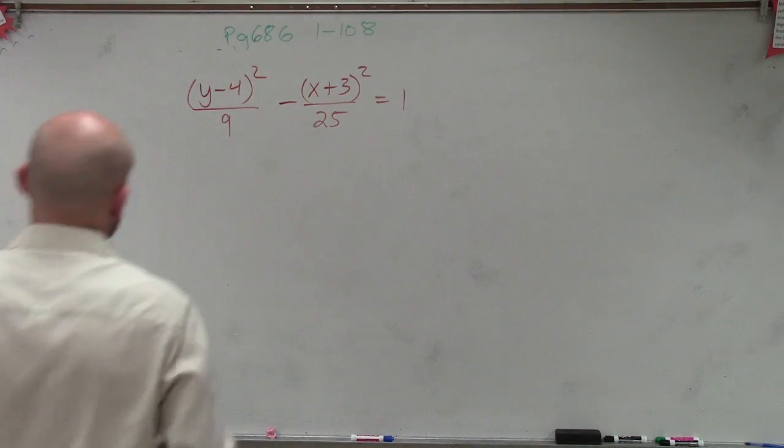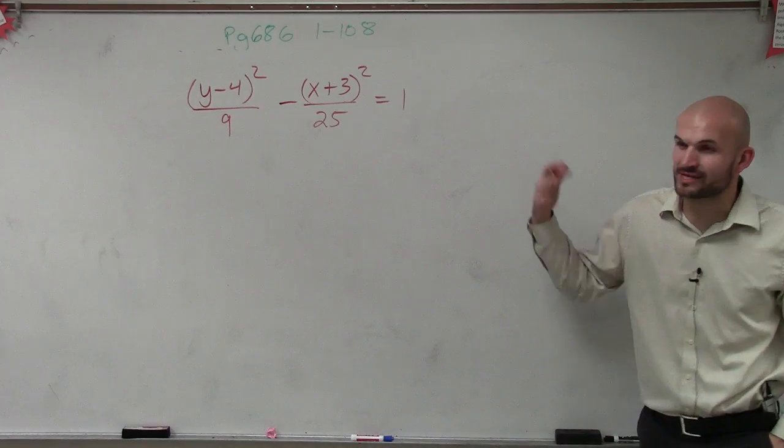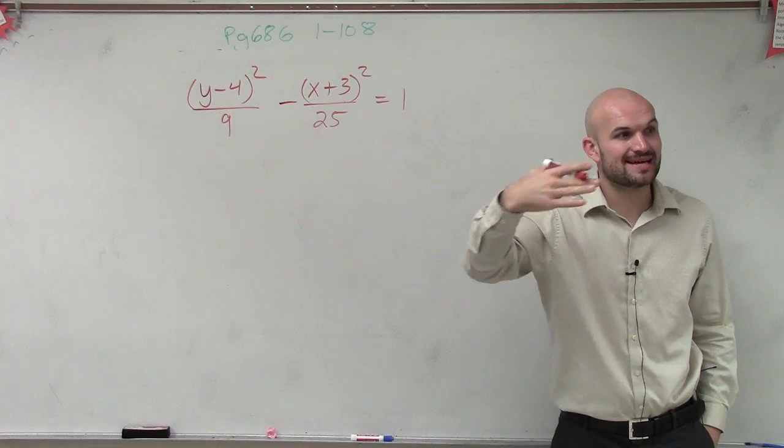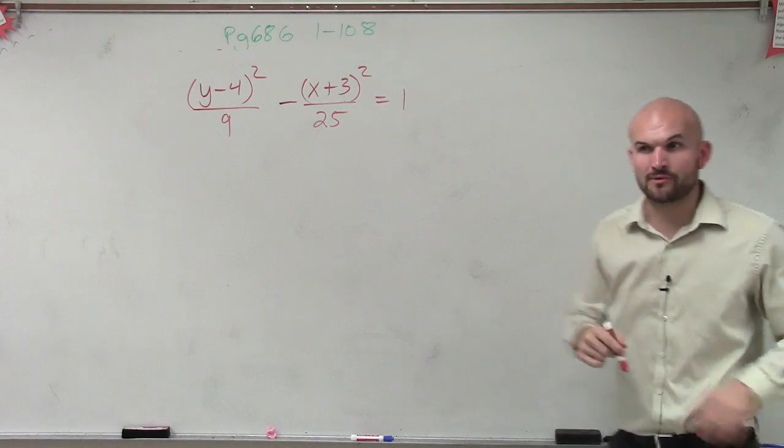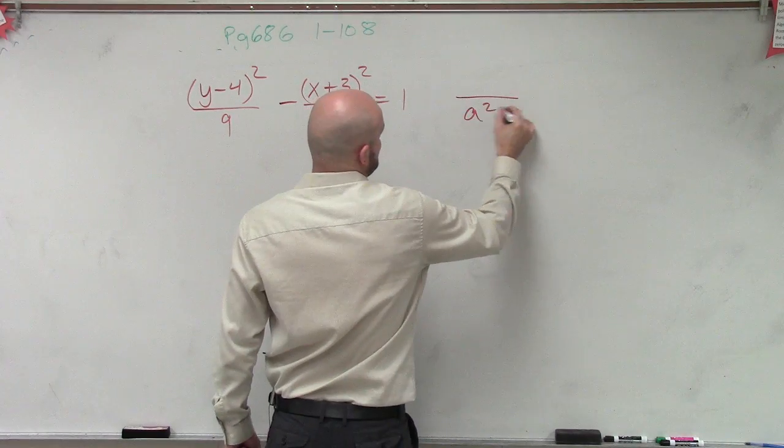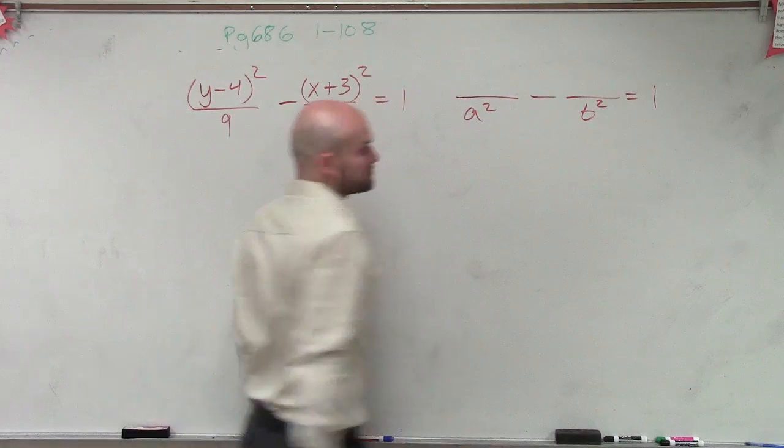All right. So in this equation, I have y minus 4 squared divided by 9 minus x plus 3 squared divided by 25. Now remember, ladies and gentlemen, we always have a squared minus b squared in our formula, right?